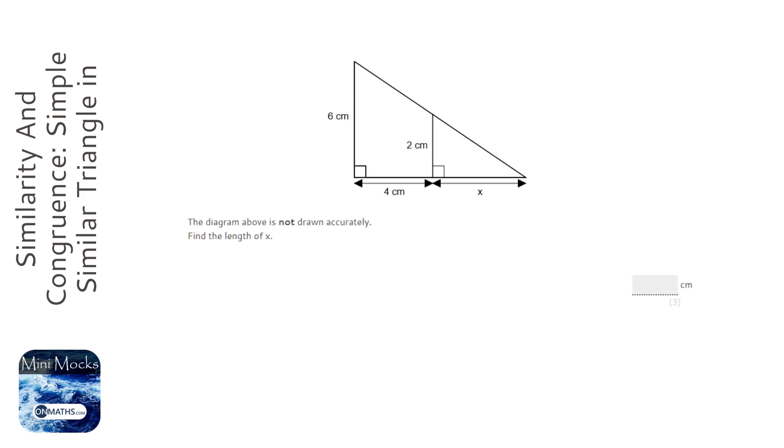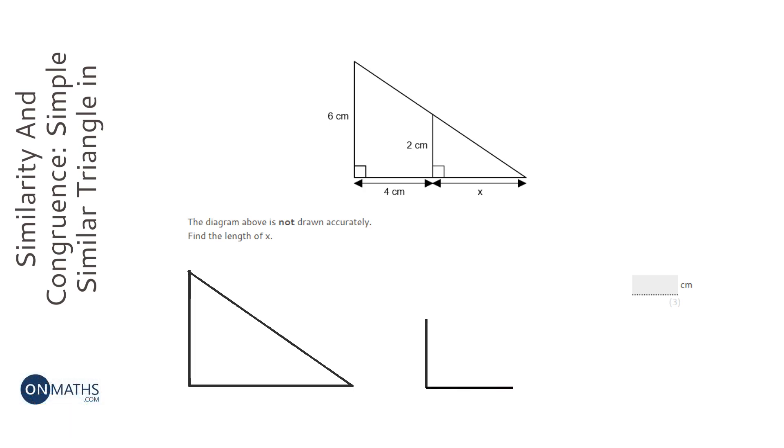Okay so we have a quite tricky looking question. Now this is the same question as what I'm about to draw. So if I draw the big triangle and I draw the small triangle separately and if I just say that they are similar, which means one is a direct enlargement of the other, it becomes a much easier question.